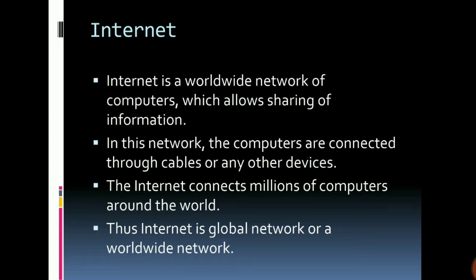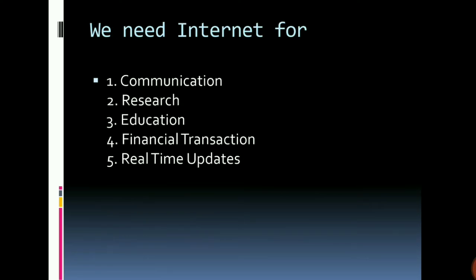So internet means a connection of computers where you can share information. We need internet for communication — communication in the sense like Gmail, Yahoo; we communicate through mail or voice messages, video calls. We also use the internet for research — we research any topic on the net — and for educational purposes, we search for education on the internet.